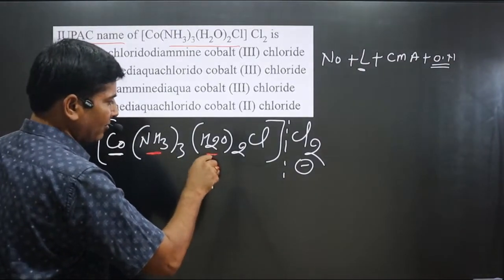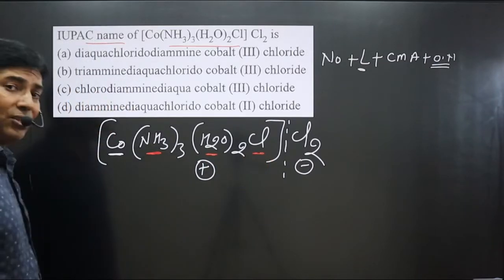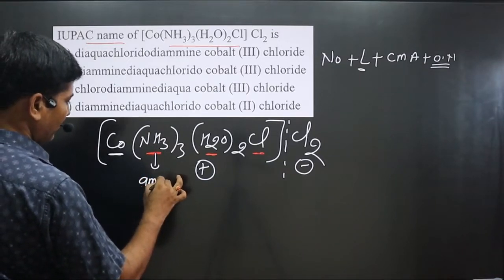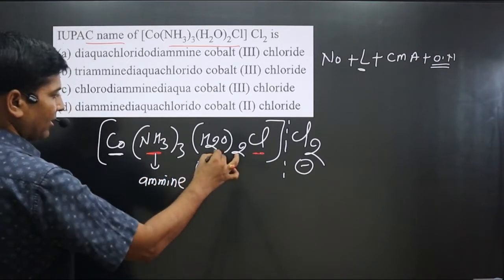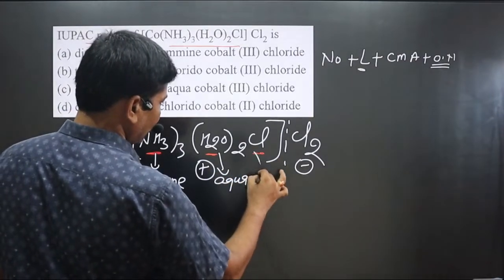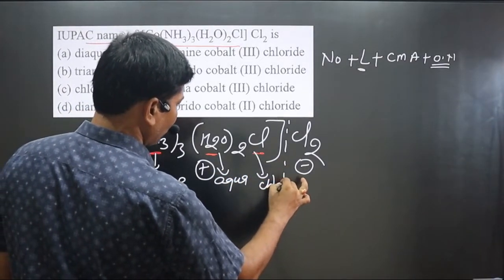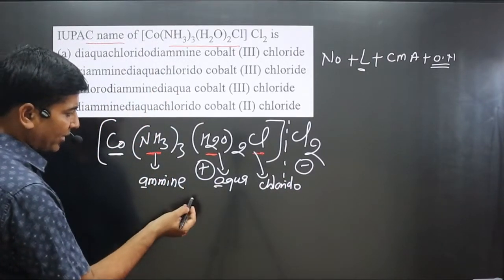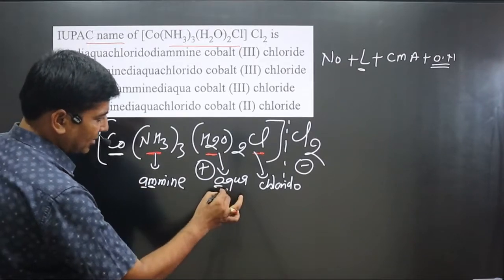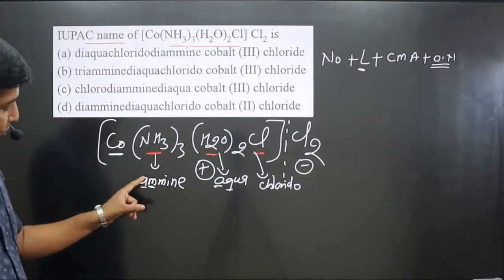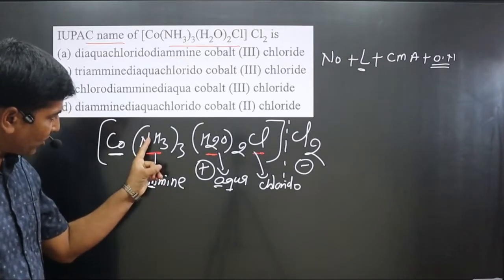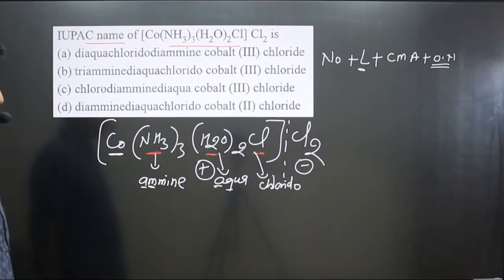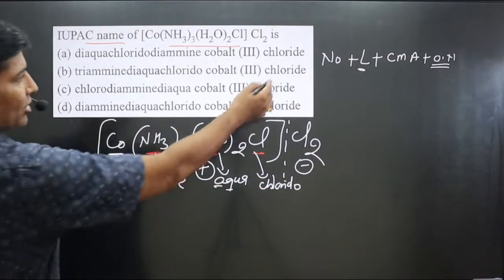There are three types of ligands: ammonia is named 'amine' (starting with 'a'), H₂O is named 'aqua' (starting with 'a'), and Cl is named 'chlorido' (starting with 'c'). Since both amine and aqua start with 'a', we compare further: 'm' comes before 'q', so ammonia (amine) is named first, then aqua, then chlorido.